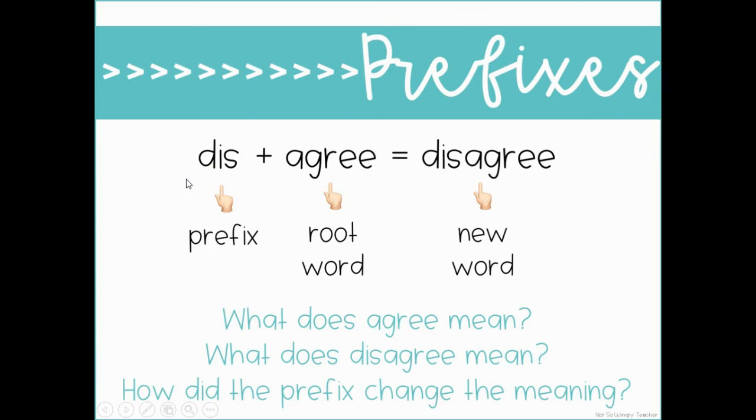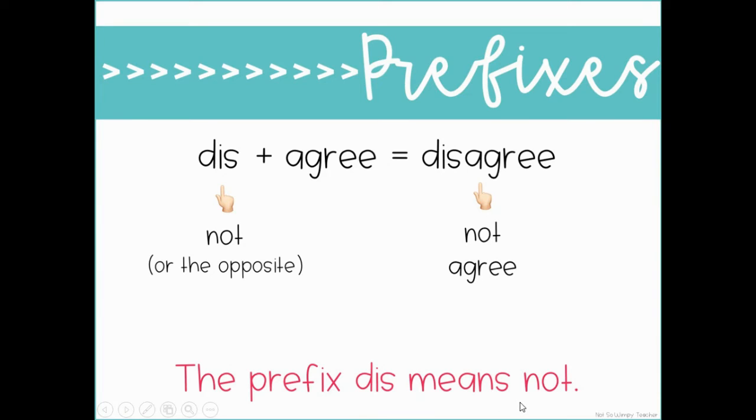We have the prefix dis, and we have the root word agree. That makes the word disagree. What does agree mean? It means that you're going to have the same feeling about something, the same opinion about something. What does disagree mean? Means you have opposite feelings about something. So how did the prefix change the meaning? The prefix dis means not or the opposite. If you see dis, it means not or it's the opposite of the root word. Disagree means to not agree.